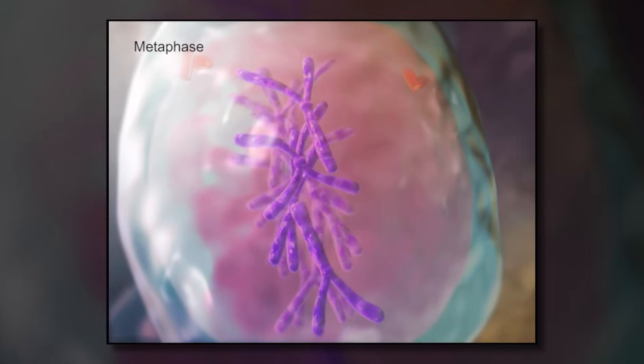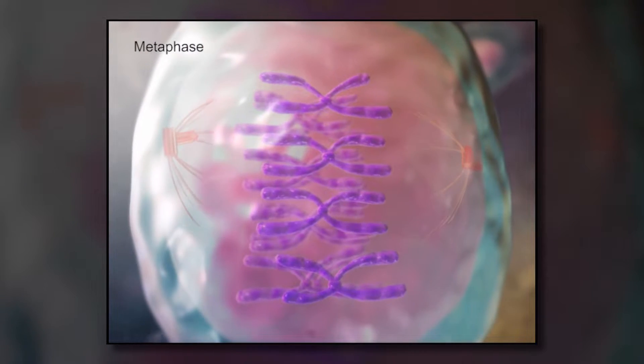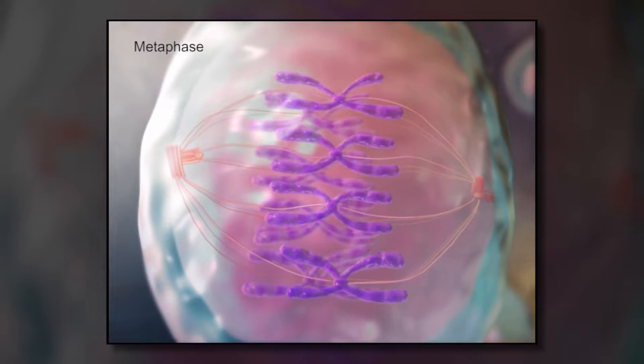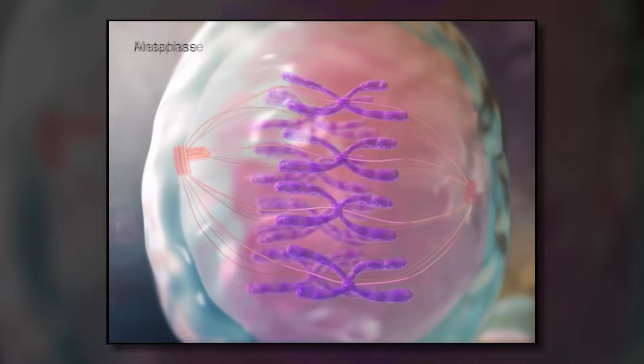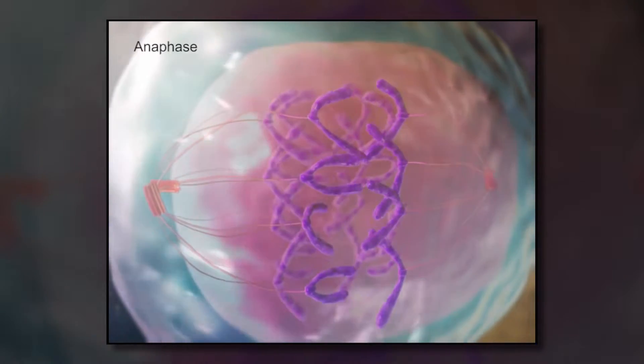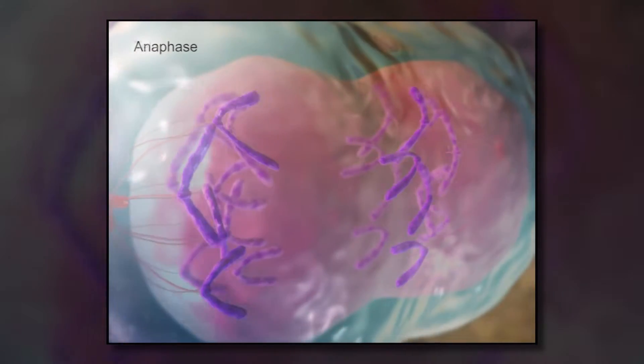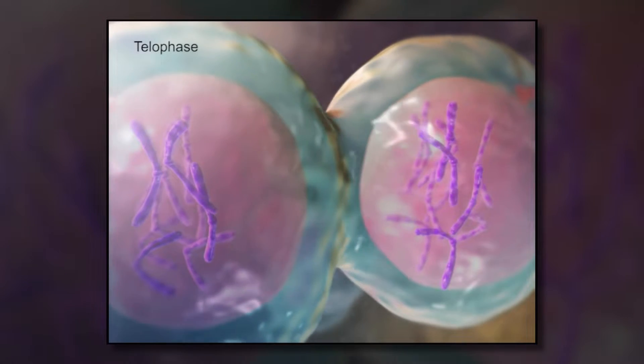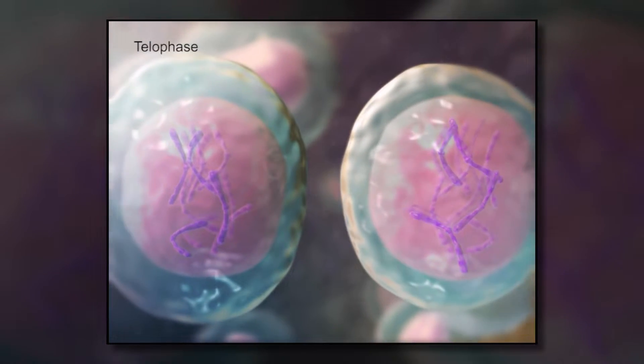Our last mover is the centrosome, a highly specialized organelle used only during cell division. The centrosome is composed of two centrioles. Each centriole migrates to different poles in the cell and connects to different things, like chromosomes. Then they play a tug of war, pulling half the chromosomes to each side, which is really important when your cell is dividing. This ensures that the two new cells have the same number of chromosomes.